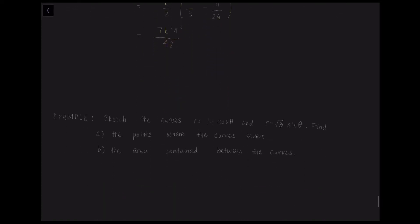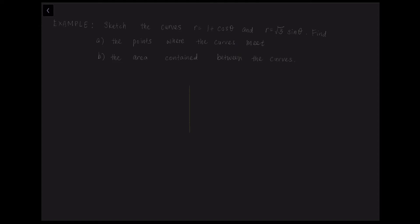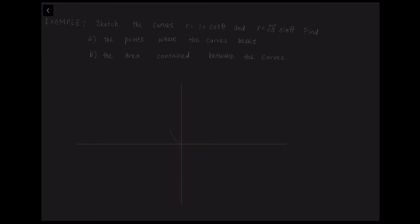And finally, the last question. It asks us to do three things. The first is to sketch the curves r equals 1 plus cos theta and r equals root 3 sin theta. For r equals 1 plus cos theta, the shape is a cardioid — it looks like a heart shape drawn horizontally. The second curve, r equals root 3 sin theta, is just a vertical circle which lies on the y-axis.